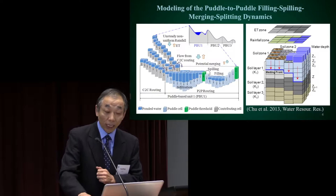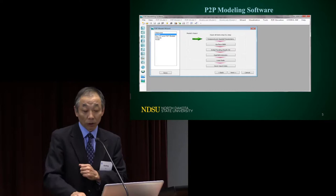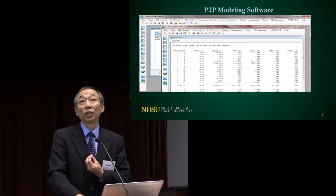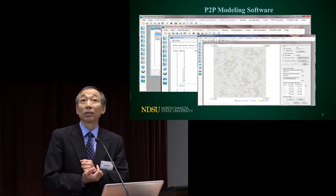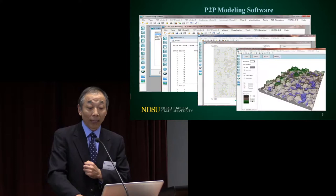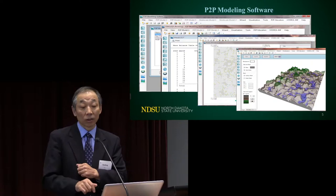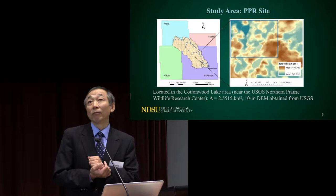If levels decrease, we see some separation. We developed this Windows-based program that includes delineation and modeling. You input all data through a Windows interface, run simulations, look at summary tables, create figures to view the depressions, and simulate how overland flow moves across the land surface and how depressions will be filled.